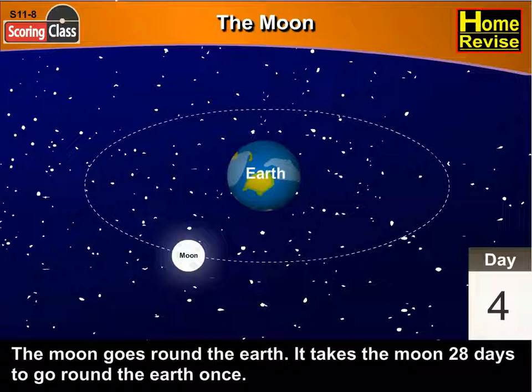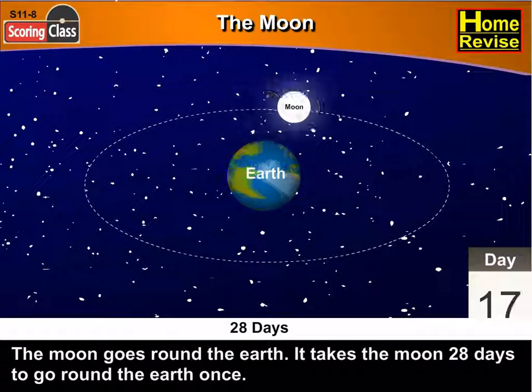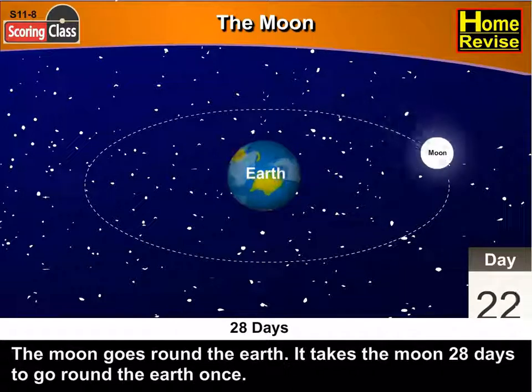The Moon goes round the Earth. It takes the Moon 28 days to go round the Earth once.